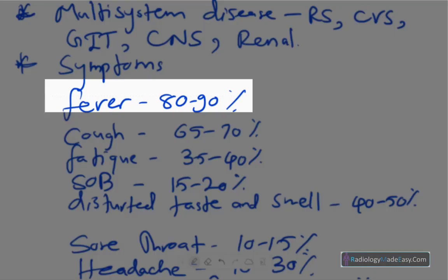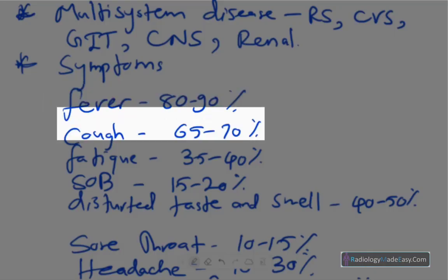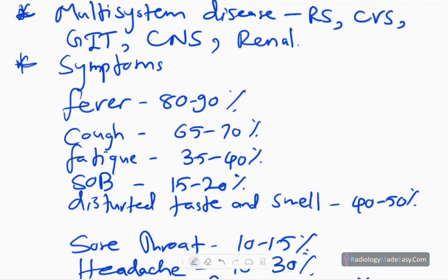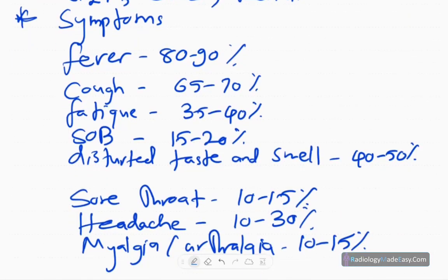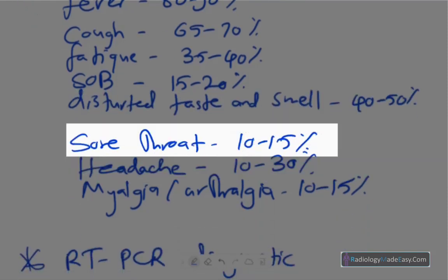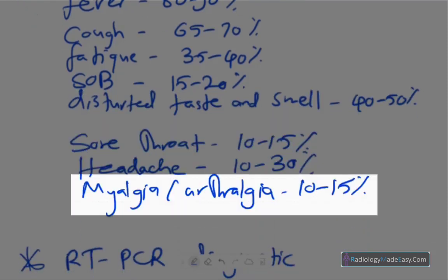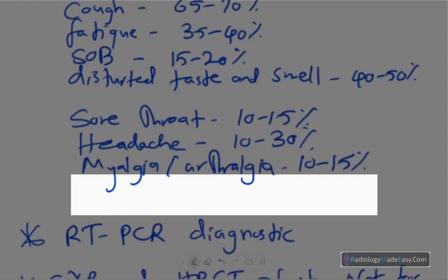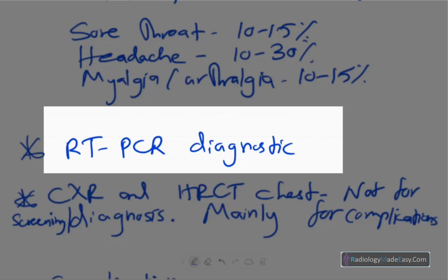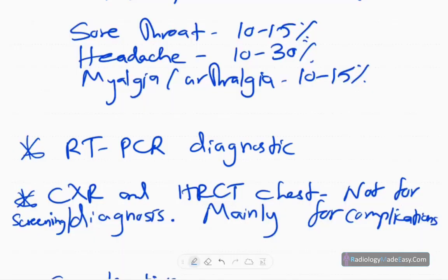Cough occurs in 65 to 70 percent of patients, fatigue in 35 to 40 percent, shortness of breath in 15 to 20 percent, and disturbed taste and smell in about 40 to 50 percent. Sore throat, headache, myalgia, and arthralgia can also occur in COVID-19 patients.